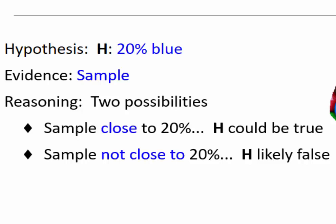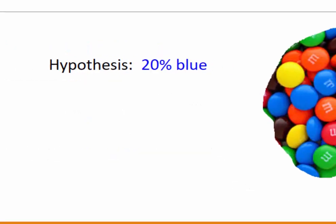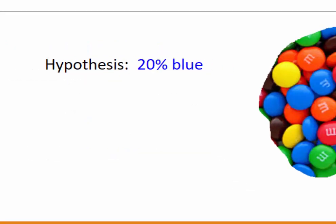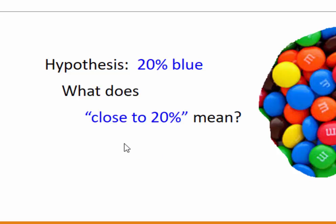A hypothesis that cannot predict actual facts is not really a very good hypothesis, and so deserves to be rejected. The trouble we have is that in dealing with a random sample, we can't really trust our intuition about what it means for a sample proportion to be close to 20% or far away from 20%. What does close to 20% really mean? Is 25% close? Or 30%? Or 40%? We need a way to decide.